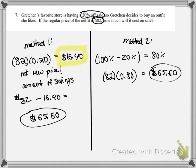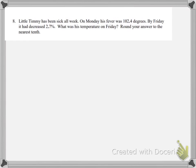All right, let's do one more example. It says little Timmy has been sick all week. On Monday, his fever was 102.4 degrees. By Friday, it has decreased by 2.7%. And then they want to know what was his temperature on Friday.